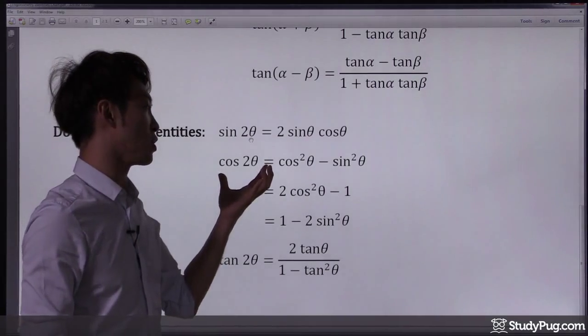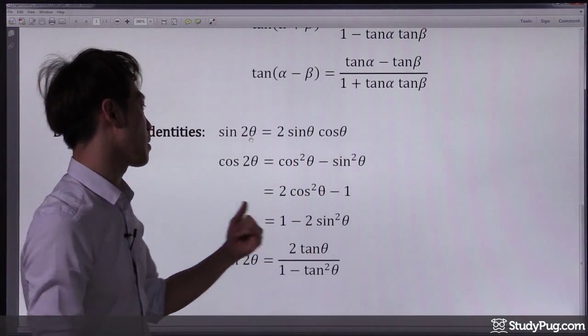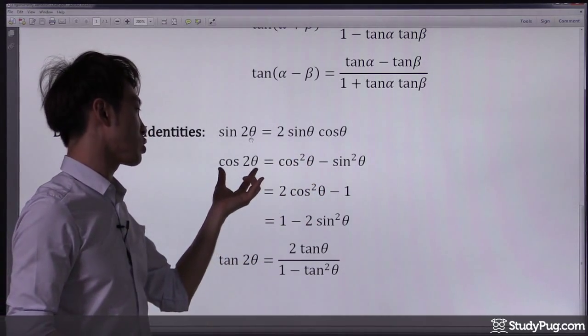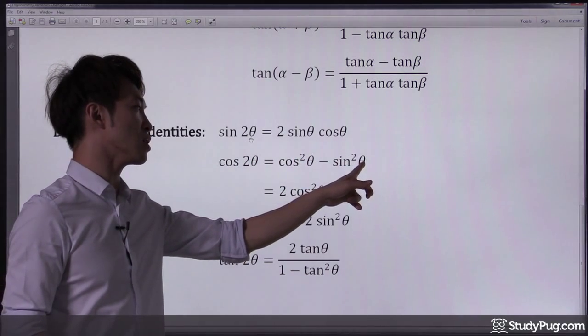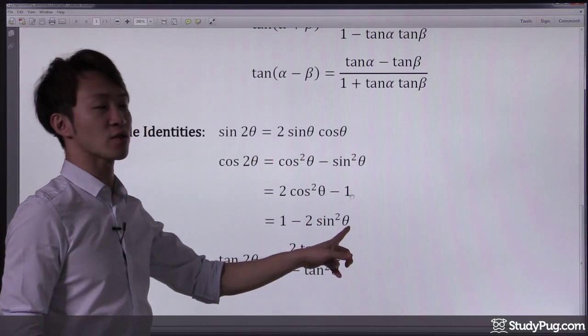Cosine 2 theta is actually the tricky one. Because when you see a question, you don't know whether you should use the first one, the second one, or the third expression.